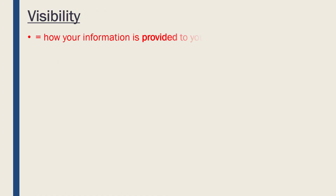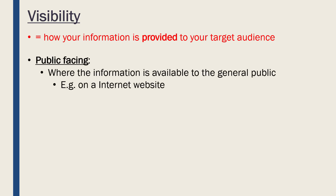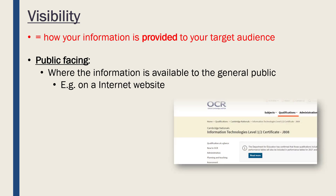Now let's look at visibility. There are two main categories. Visibility is about how you are actually providing your information to your target audience — specifically, who can access it based on how you provide it. The first is public-facing methods, where you provide the information to anyone — the general public. A good example is websites on the internet, where anyone can access it as long as they have an internet connection. Even if the people accessing it are not your target audience, anyone can view it — for instance, the OCR website for this course can be accessed by anyone, even though OCR's target audience is just parents, teachers, and students.